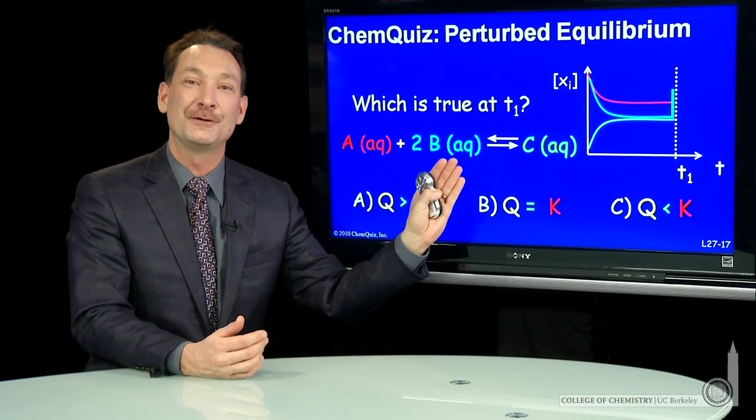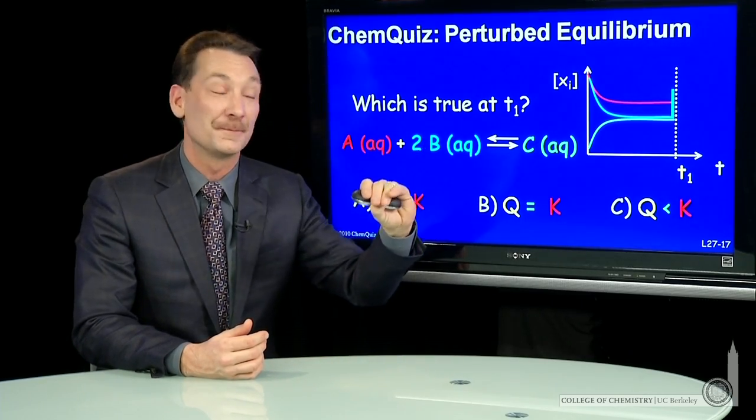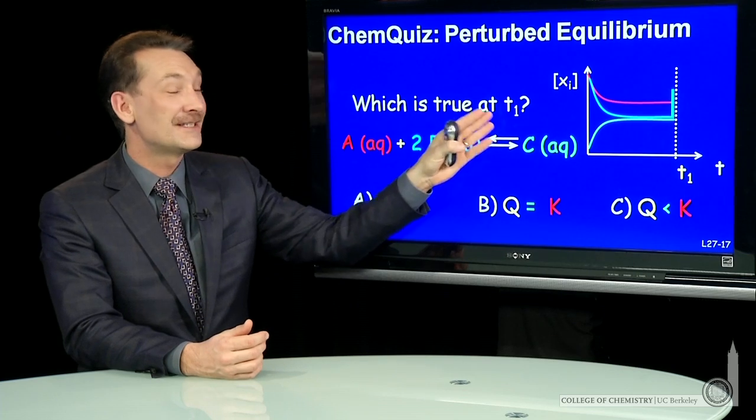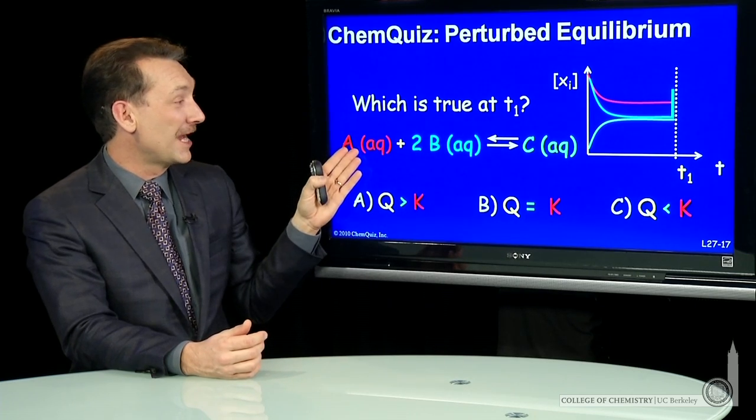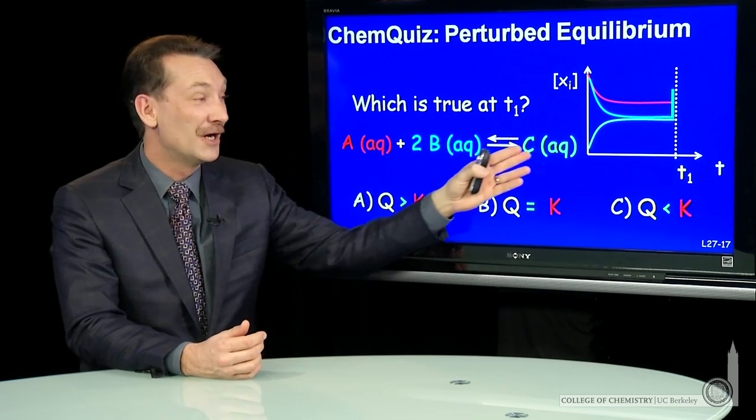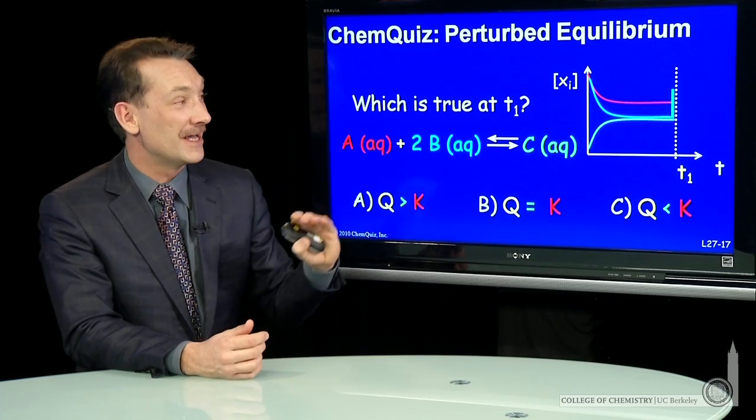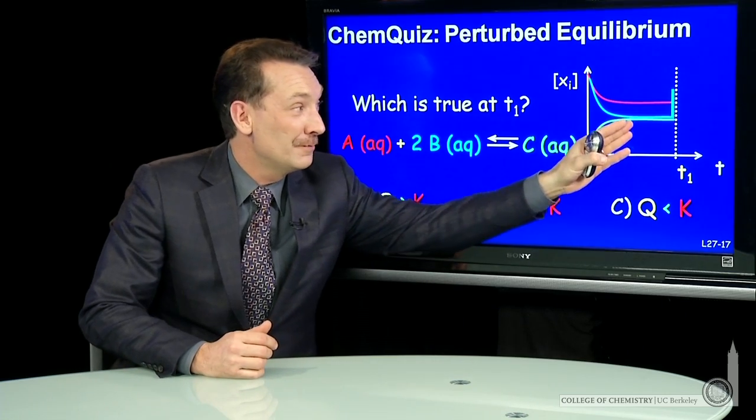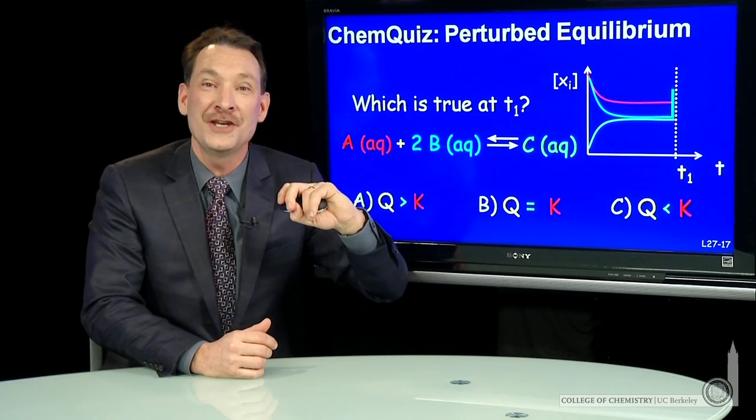Let's look at a chemical reaction that's at equilibrium and then we disturb it. So which is true at time 1 for the chemical reaction A and B go to C in the aqueous phase? And you have equilibrium and then a perturbation of one of the concentrations.